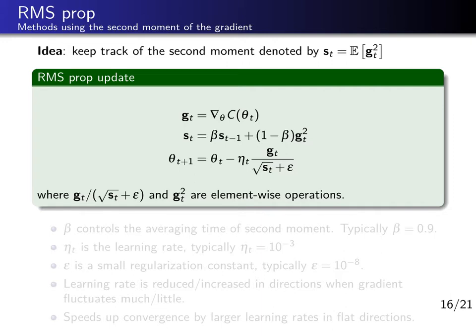Let us start with the RMSprop algorithm. First we define the second moments. The gradient of the loss function with respect to the parameters at time or iteration t is called gt. We define the second moment as the expectation value of the gradient squared, where the square is applied to every individual element of this vector. The RMSprop update rule is defined as follows: first we compute the gradient as usual, just the first derivatives of the loss function with respect to the parameters.